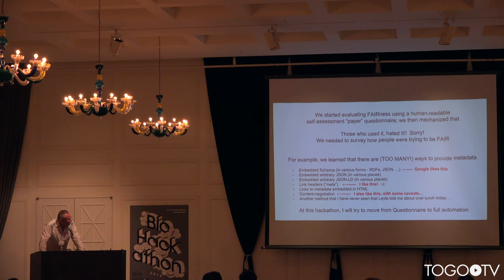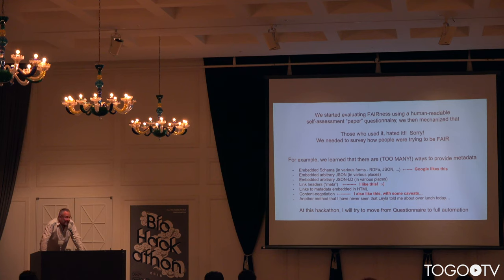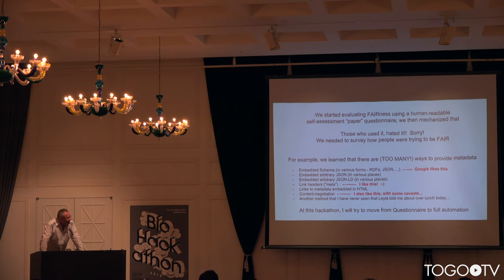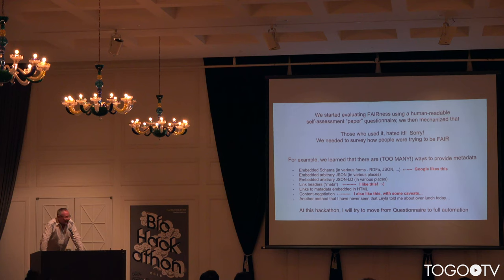There can be embedded schema in various forms, which is what Google likes; embedded arbitrary JSON in various places in the document; embedded arbitrary JSON-LD also in various places. Some resources are using link headers — the meta link header, which I particularly like. There can be hyperlinks to metadata embedded in HTML, which are extremely hard for a machine to find. There can be content negotiation, which I also like with some caveats, and another method I was told by Leila over lunch today is being used at EBI.